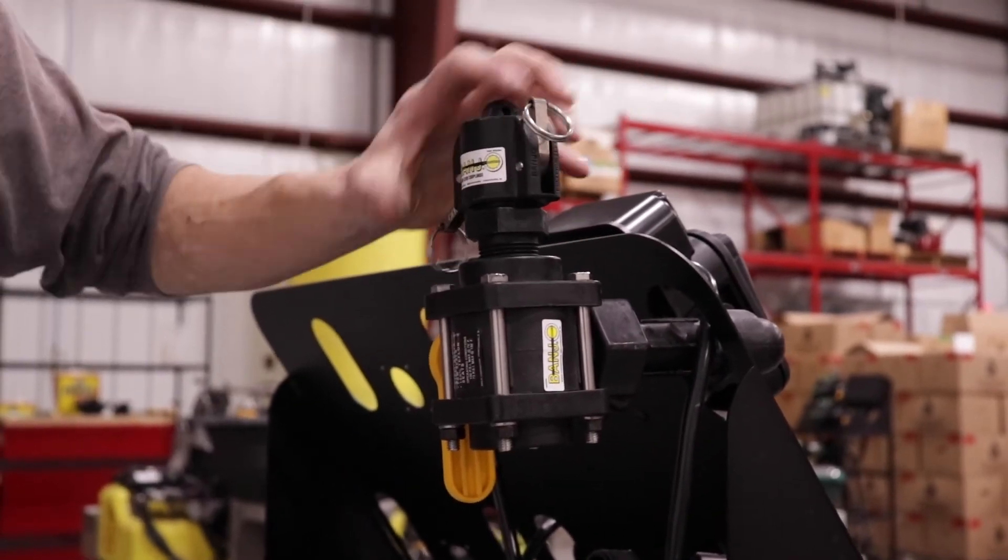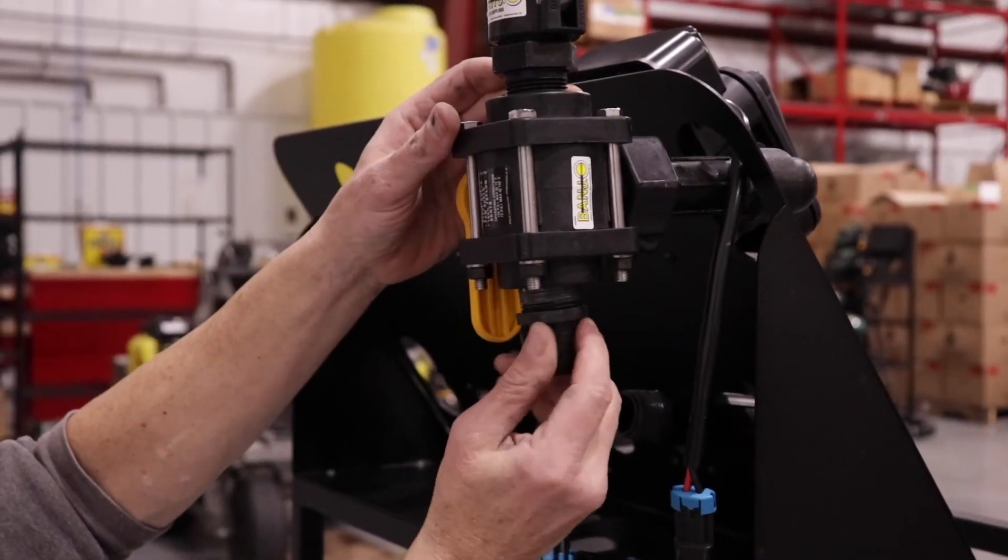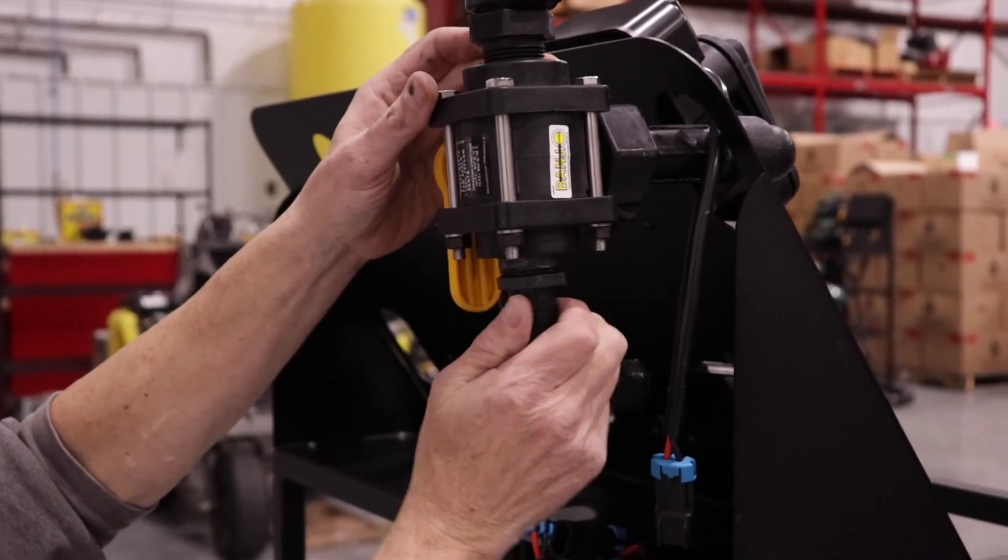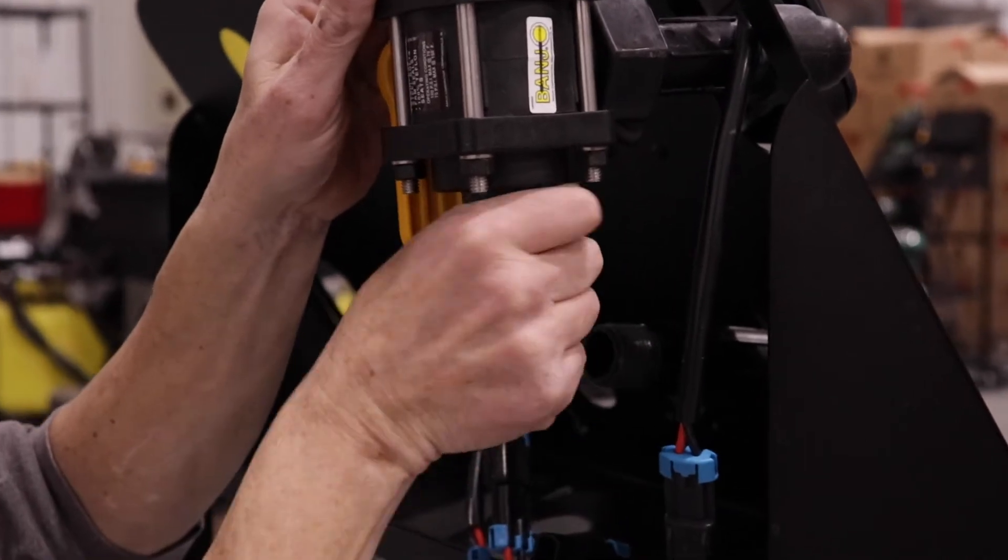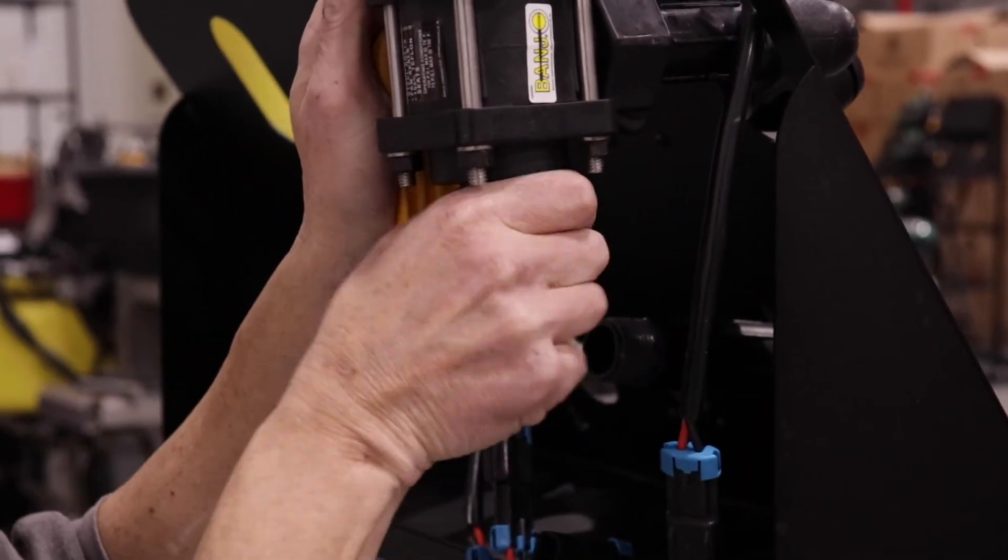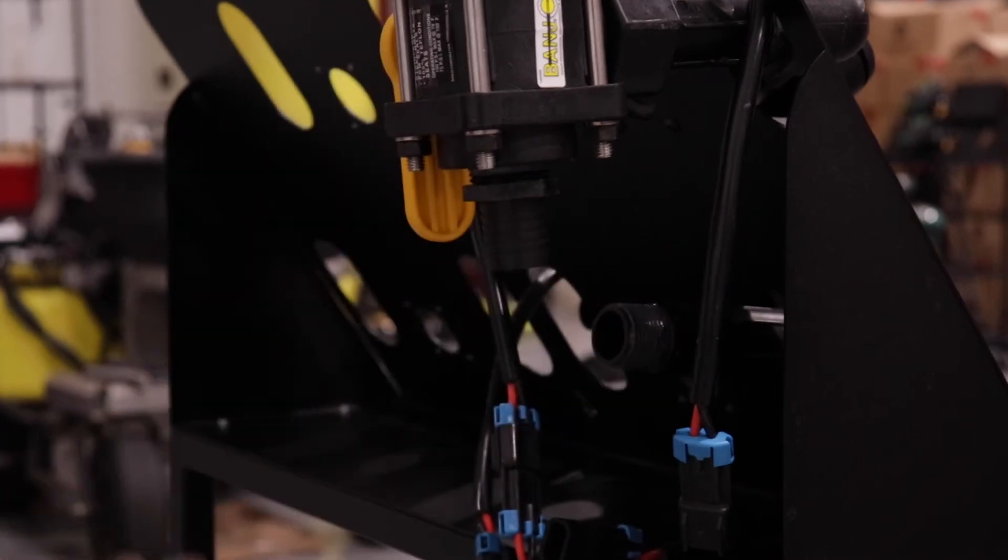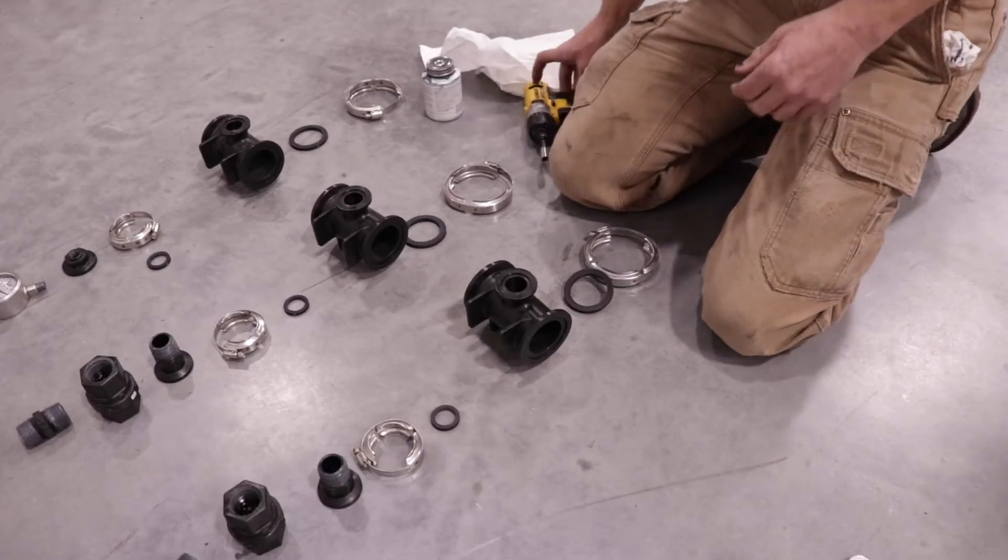Install the cam lock adapter into the top outlet of the valve, then add the cam lock cap. Install a one inch straight hose barb into the bottom outlet of the valve. Repeat for the remaining meters.